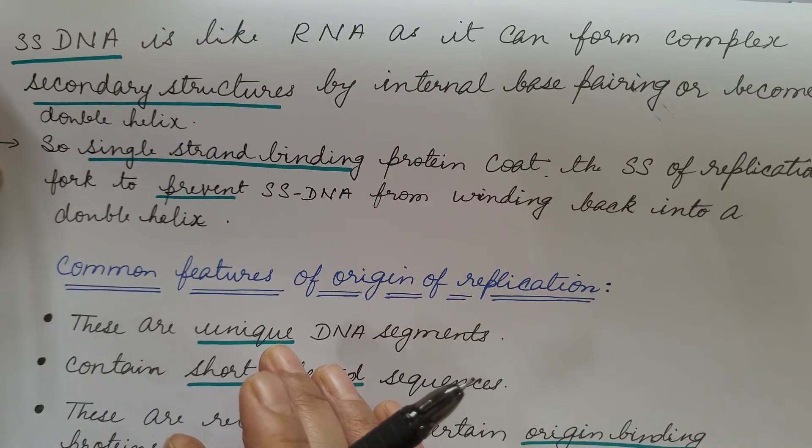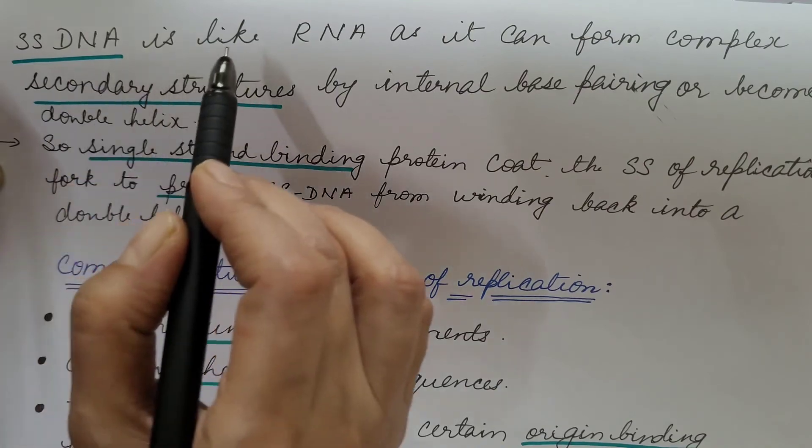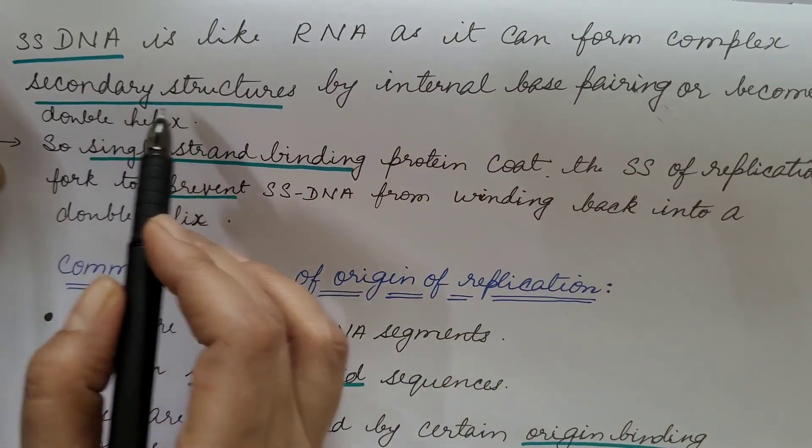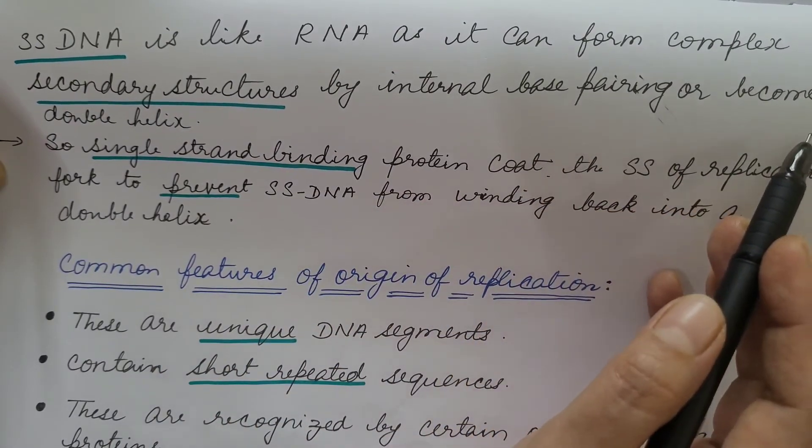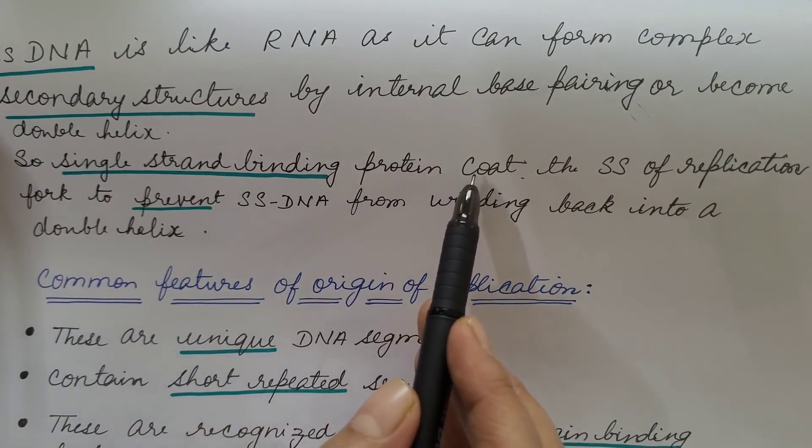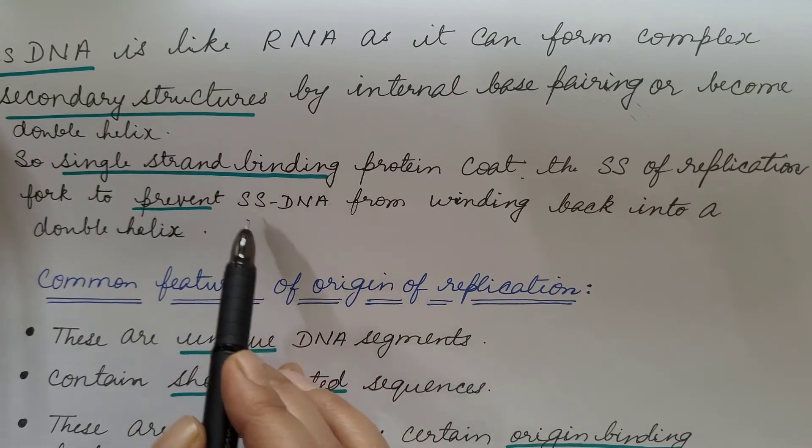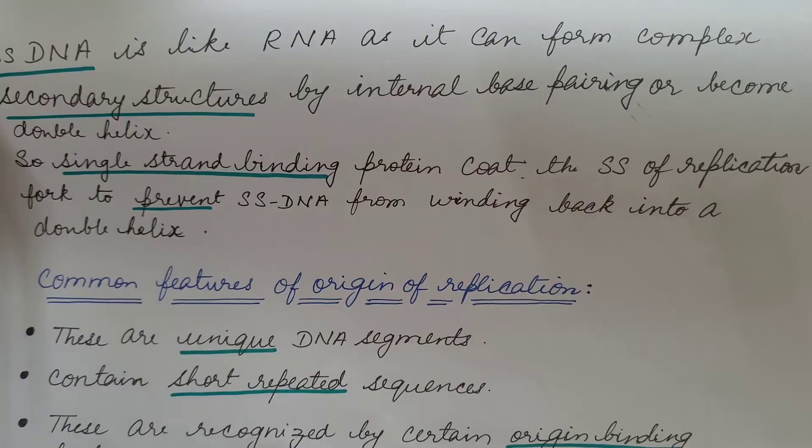As the two strands of DNA separates, it becomes single-stranded and this single-stranded DNA is like RNA as it can form complex secondary structures by internal base pairing or become double helix. So single-strand binding protein coat the single-strand of replication fork to prevent single-stranded DNA from winding back into a double helix.